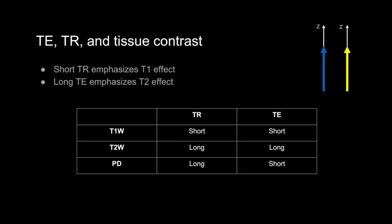A T1-weighted sequence uses short TRs to emphasize T1 effect and short TEs to minimize any T2 effect. T2-weighted images use a long TR to minimize T1 effect and a long TE to maximize T2 effect. Proton density sequences — not used much in routine body imaging — use a long TR to minimize T1 effect and a short TE to minimize T2 effect. If you minimize both T1 and T2 effects, you're left with just the density of protons — hence proton density.